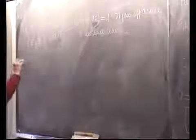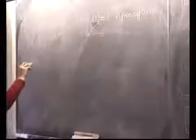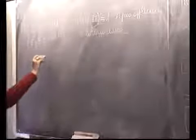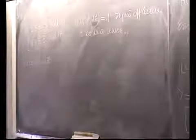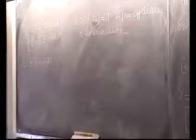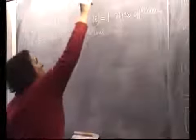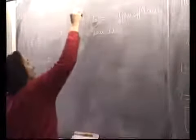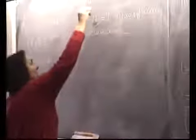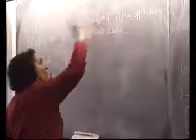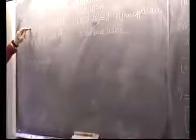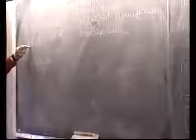Cominciamo a risolvere le singole congruenze: 5x ≡ 13 (mod 21). mcd(5, 21) = 1 e mcd(7, 17) = 1: queste due prime condizioni mi dicono che la prima ammette soluzioni e la seconda ammette soluzioni.